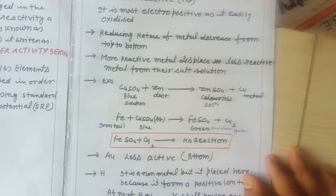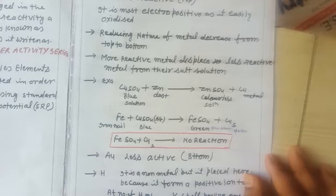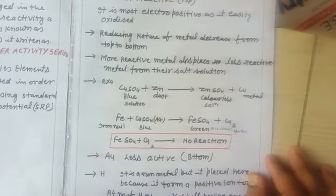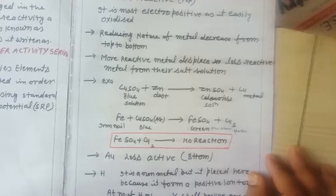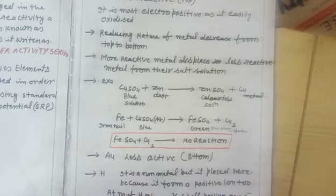The reducing nature of metals decreases from top to bottom according to the electronic concept of chemistry. Those elements which have the greater tendency to lose electrons from the outermost shell are reducing agents. Therefore, the reducing nature of metals decreases from top to bottom.